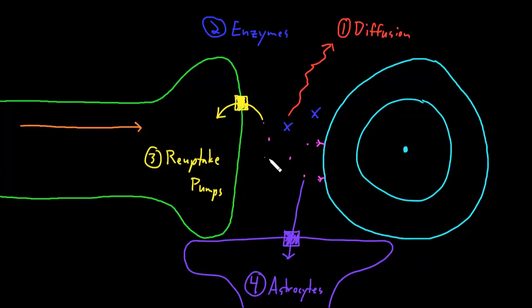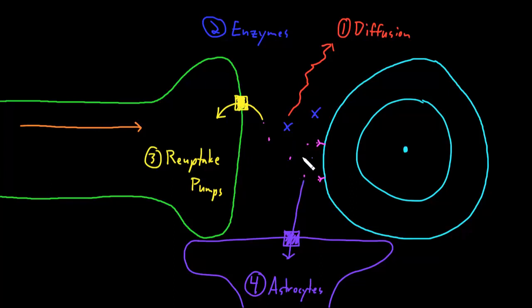All of these different methods allow the synapse to basically be rapidly turned on and off, because neurotransmitter can be rapidly released into the synaptic cleft and then rapidly cleared out, so that the synapse is capable of conveying more information from the neuron to the target cell.